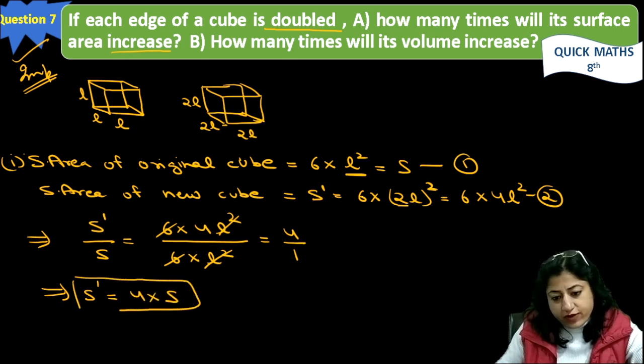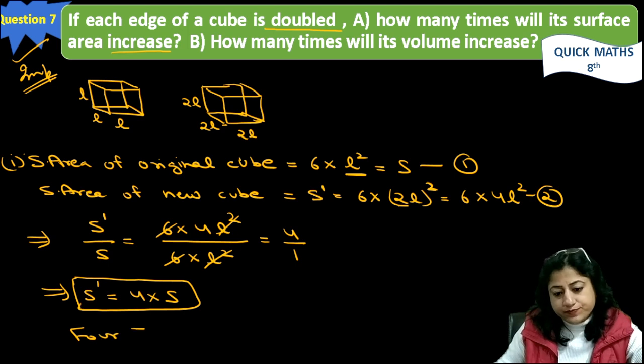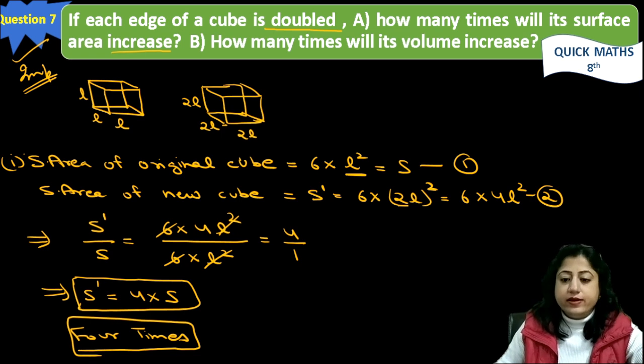Hence, we can say S dash is equal to 4 into S, means the new surface area will become 4 times than the original surface area. So the answer is 4 times, 4 times the surface area will be increased.